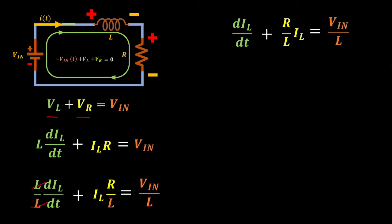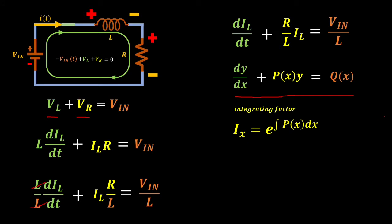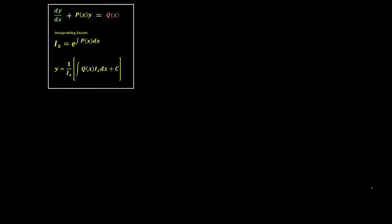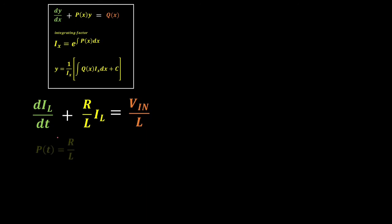Now we can use the known solution form for the first-order linear differential equation: dy/dx + p(x)·y = q(x). We will use the integrating factor I_x equal to e raised to the integral of p(x) dx. The final solution for y is 1 over the integrating factor, multiplied with the integral of q(x)·I_x dx, plus a constant. Using this solution pattern, we have p(t) = R/L and q(t) = VIN/L.